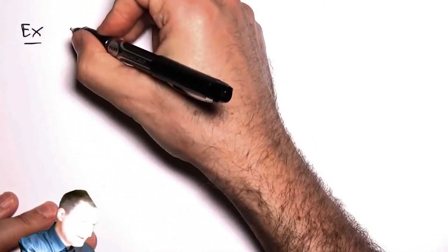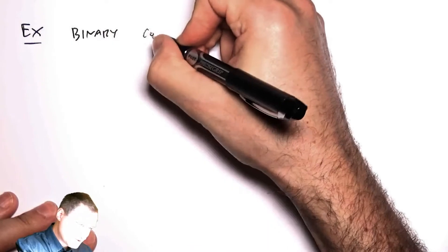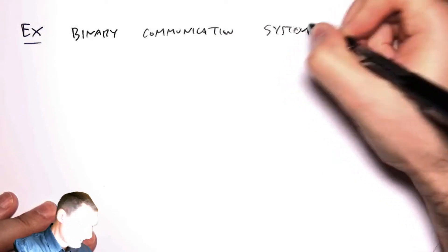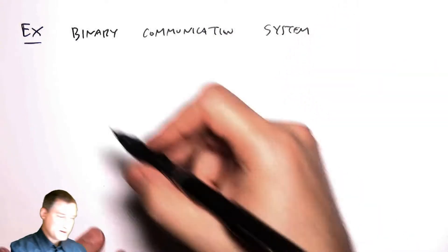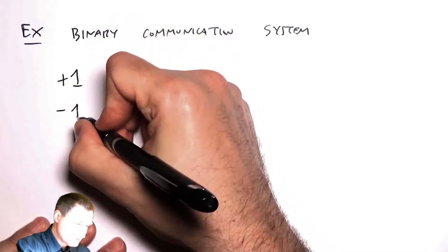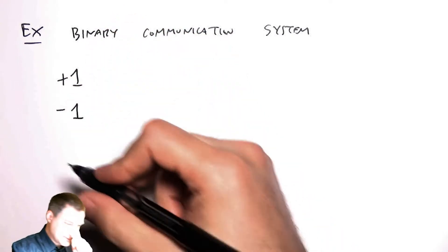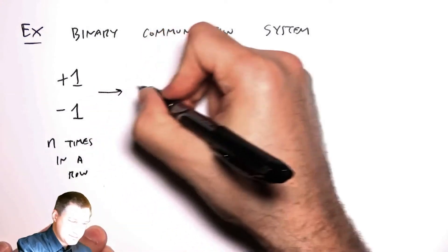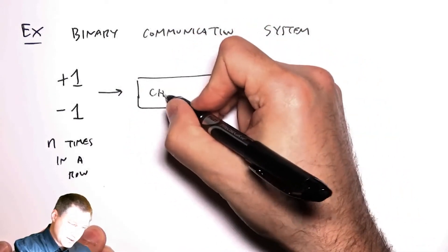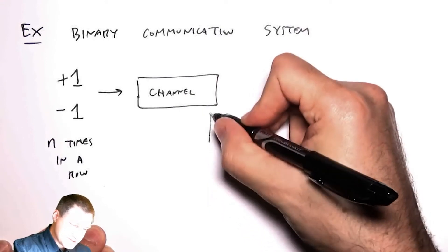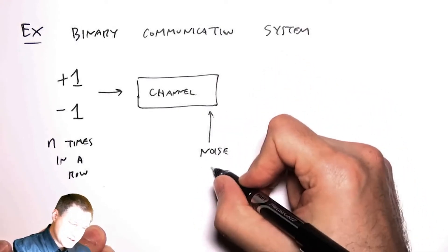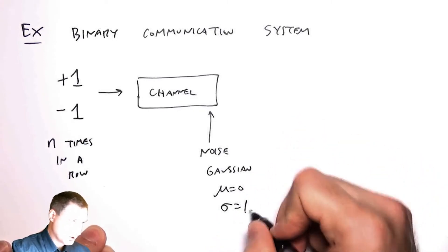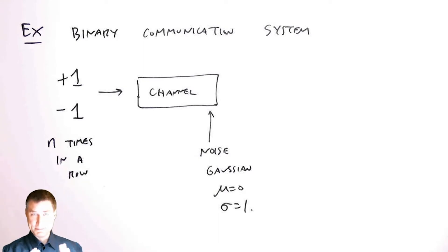Here's the setup, and this is basically the kind of problem you'd see as one of your first communication systems problems. I have a binary communication system, which means the system is transmitting either plus ones or minus ones, and I'm transmitting the same bit n times in a row. Each bit goes through the channel, and what the channel does is add noise — Gaussian noise with mean zero and sigma equal to one.